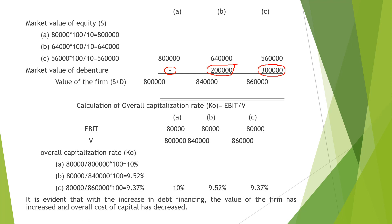When there are no debentures, the value of the firm is 8 lakhs. When debentures are 2 lakhs, the value of the firm is 8,40,000. When debentures are 3 lakhs, the value of the firm is 8,60,000. Thus, introducing more debt increases the value of the firm.